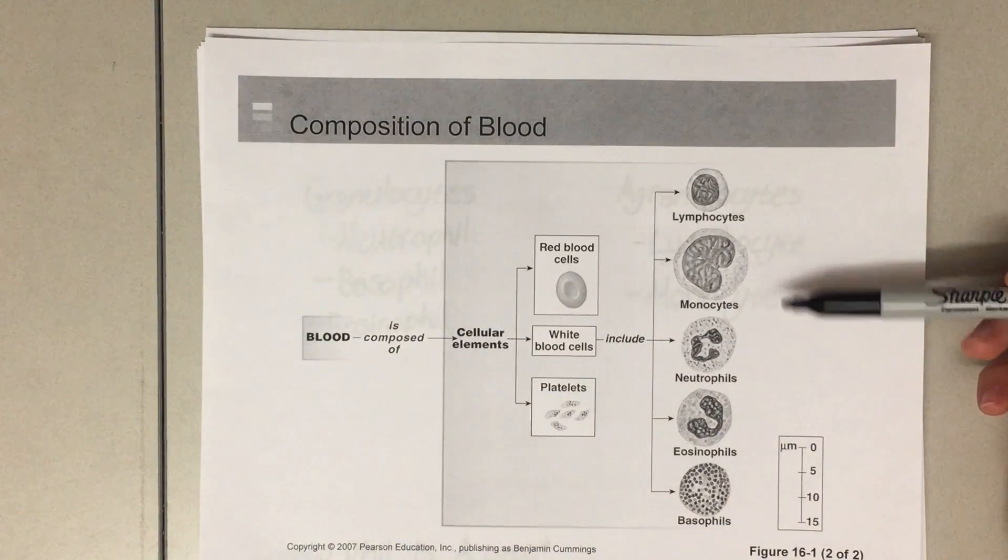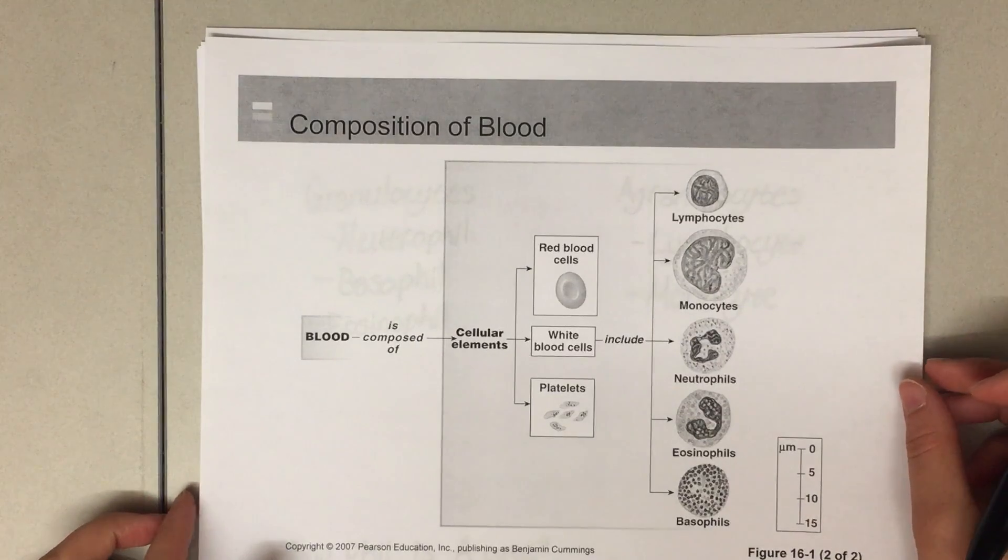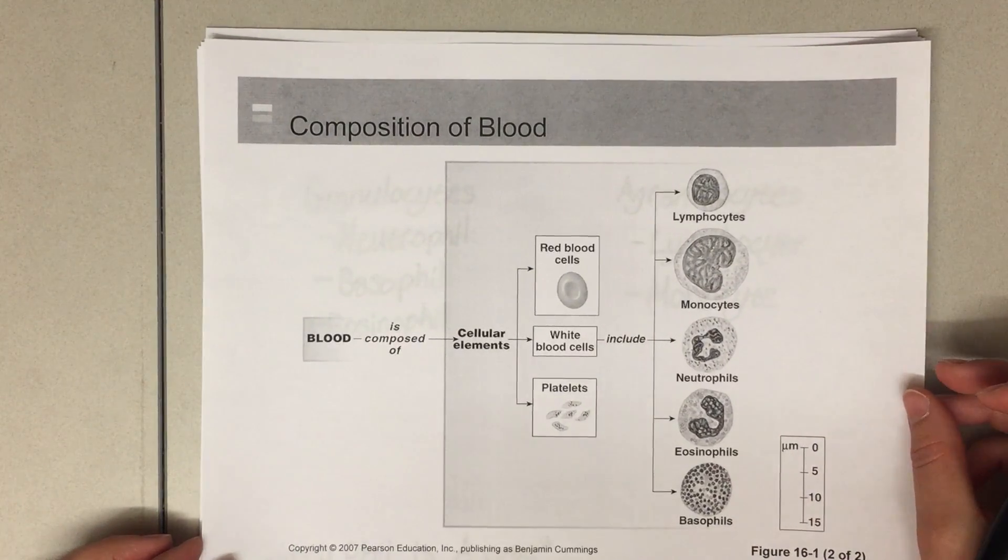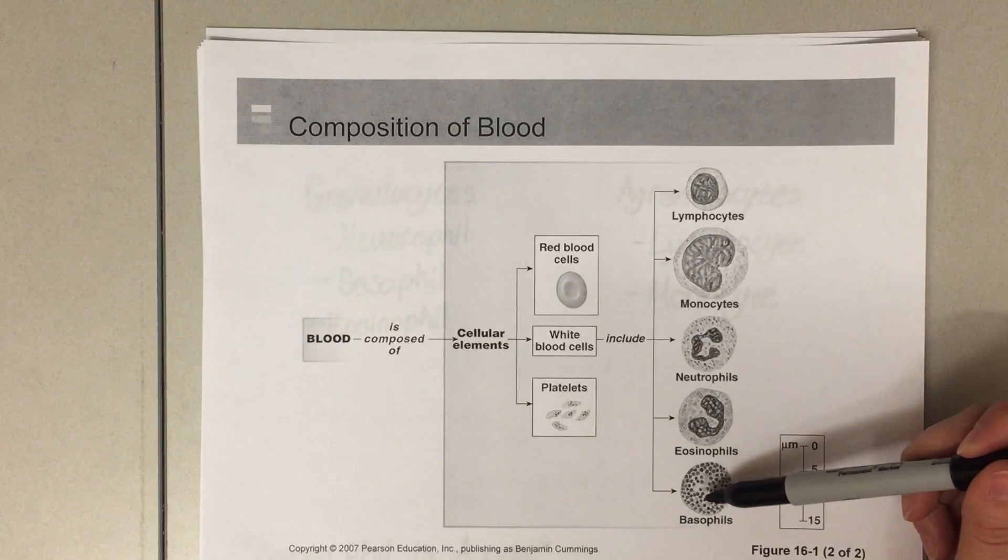These different types of leukocytes can be divided into two subclasses labeled granulocytes and agranulocytes, based on whether they have granules in the cell or if they don't contain granules.